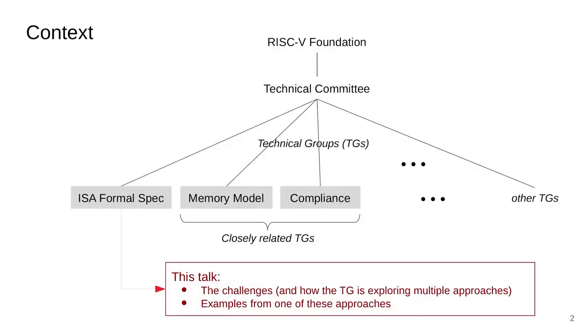To set some context: under the technical committee of the RISC-V Foundation there are technical groups, and this particular work was contributed under the aegis of the ISA Formal Spec group, which works closely with two others — the memory model and the compliance group. The memory model is looking into memory consistency models for RISC-V processors, and compliance is trying to define a set of tests that tells you whether what you've implemented is a valid RISC-V processor. Both of these, especially the compliance group, would likely be the first internal users of the ISA formal specification, using it as a reference model.